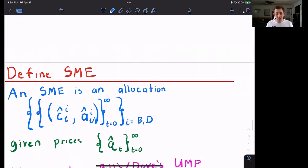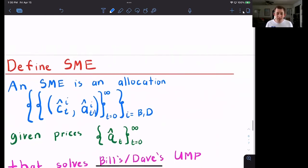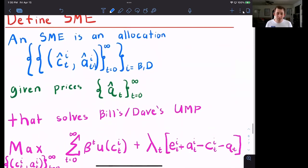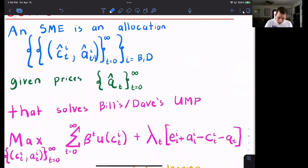Given prices, Q_t from t equals zero to infinity, it's got to solve both Bill's and Dave's utility maximization problem. This is their utility maximization problem. This is their budget constraint in each period. So notice that this lambda now has a t because there are t lambdas or t constraints in this maximization problem.